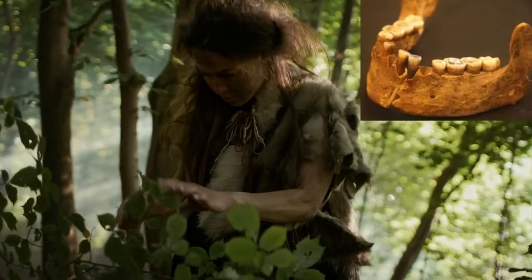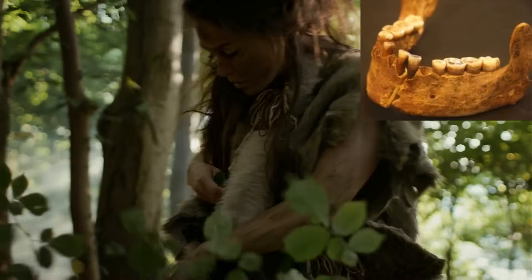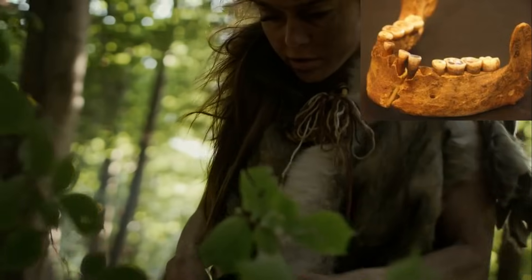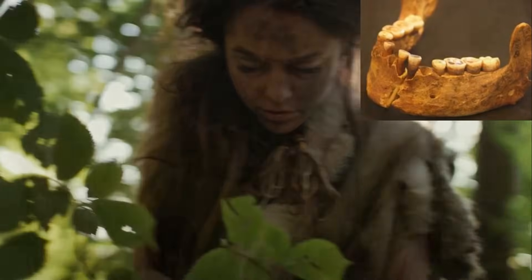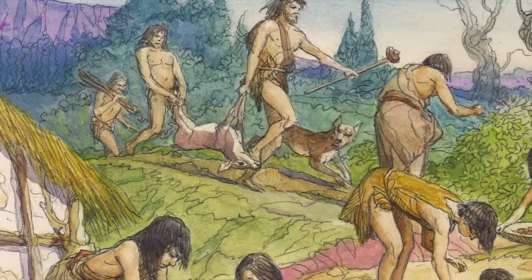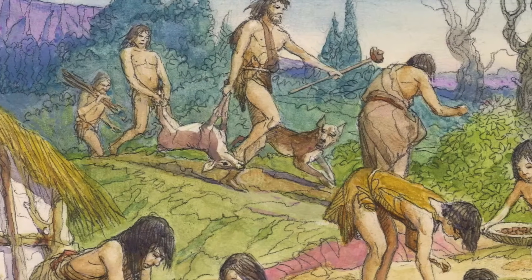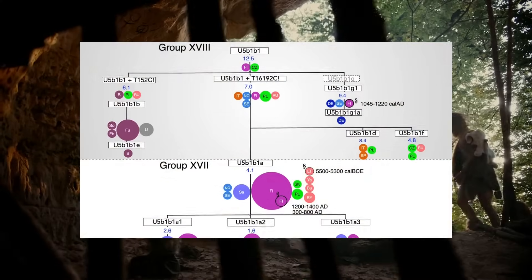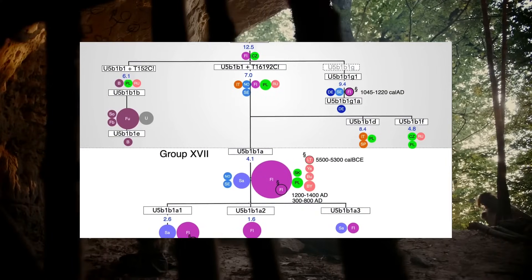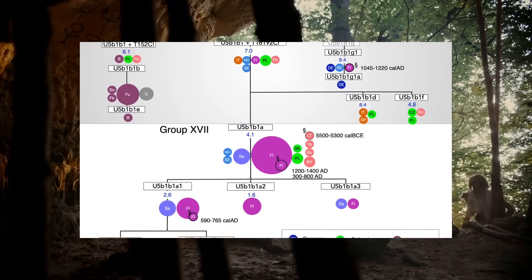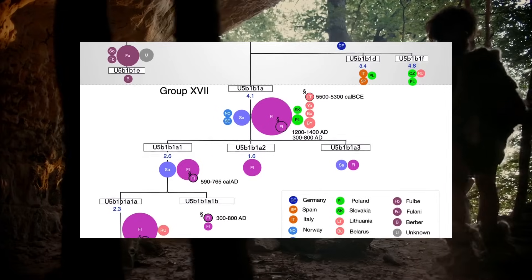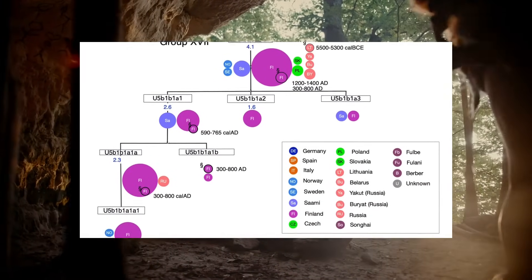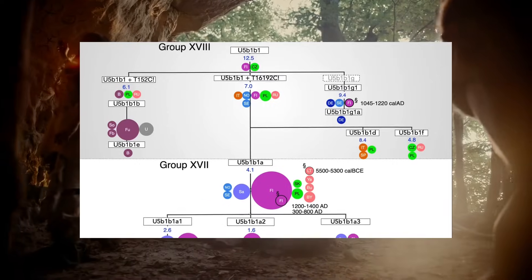Genome-wide analyses revealed a startling discovery. Despite belonging to a major European cultural complex, her genetic lineage does not persist substantially in later European populations. This finding contradicts earlier assumptions that Magdalenian hunter-gatherers directly contributed to the genetic makeup of subsequent European populations. The El Miron individual carried mitochondrial haplogroup U5b, common among European hunter-gatherers.